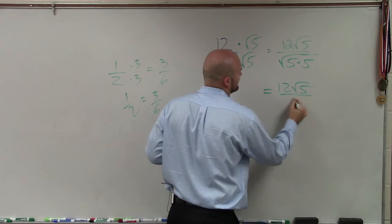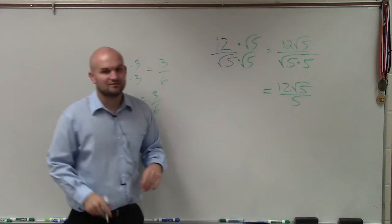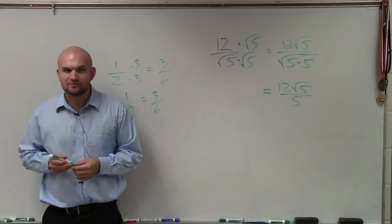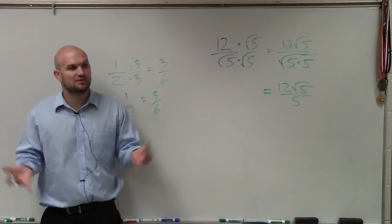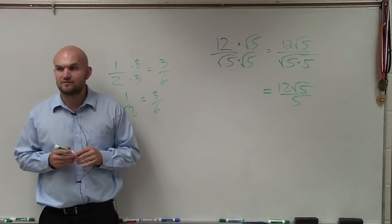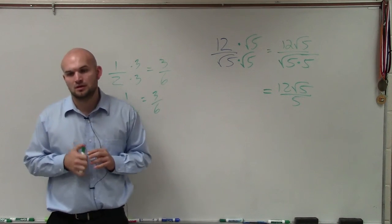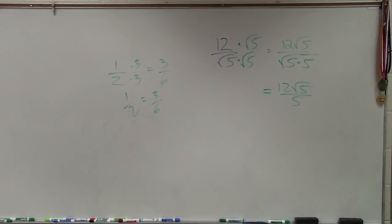Anybody? Bueller? It's just going to be 5. Square root of a pair of numbers, right? 5 times 5 is 25. Square root of 25 is 5. Anybody have any questions? I got two more problems to do.